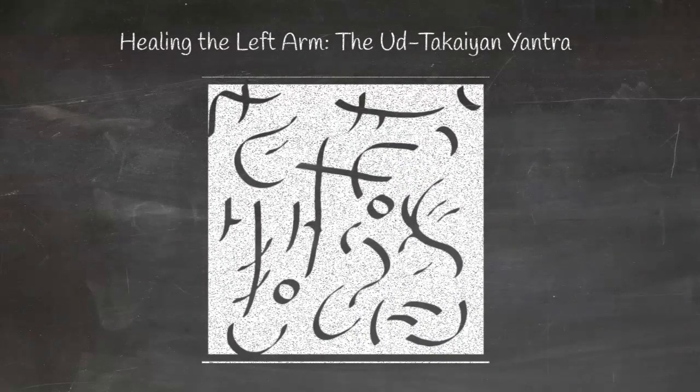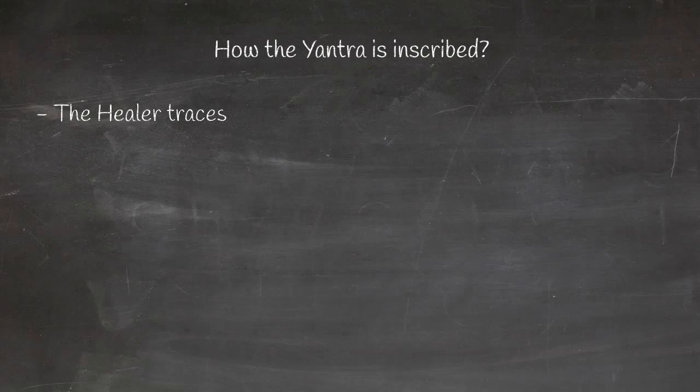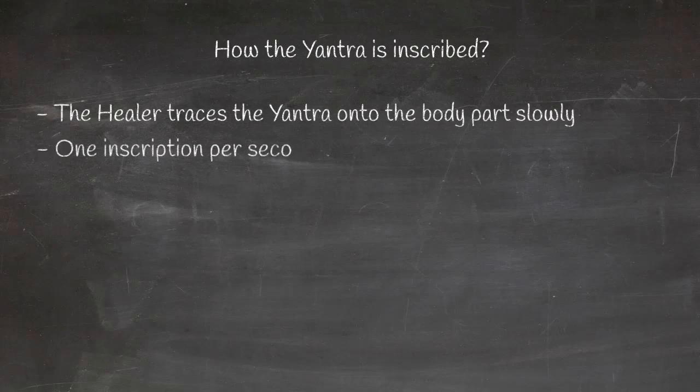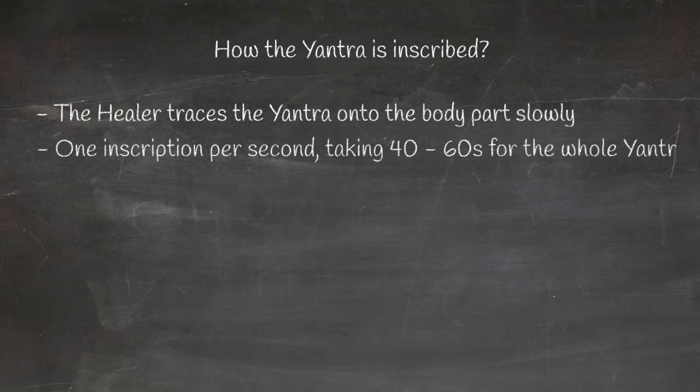The Uttakayin yantra is inscribed on the arm. The Ayyanist healer will then trace the yantra symbols on the body part slowly using their index finger. One symbolic inscription per second is usually an optimized traditional speed that has been passed down the generations, with the whole inscription completed in 40 to 60 seconds.